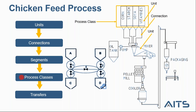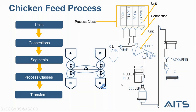Later on, we will be defining the process classes. Process classes are when we group more than one unit under the same title. For example, corn, starch, soya, and vitamins are all raw materials, so we can group them under the name bulk storage. And finally, we will be talking about the transfers. Now let's jump right into the demo to show you the configuration.